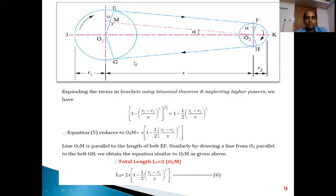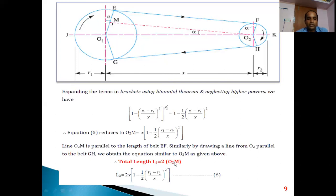Now combining all three sections: L = L1 + L2 + L3. Substituting: L = (π + 2α)R1 + (π − 2α)R2 + 2X(1 − (1/2)((R1−R2)/X)²). Opening the brackets gives πR1 + 2αR1 + πR2 − 2αR2 + 2X − (R1−R2)²/X.